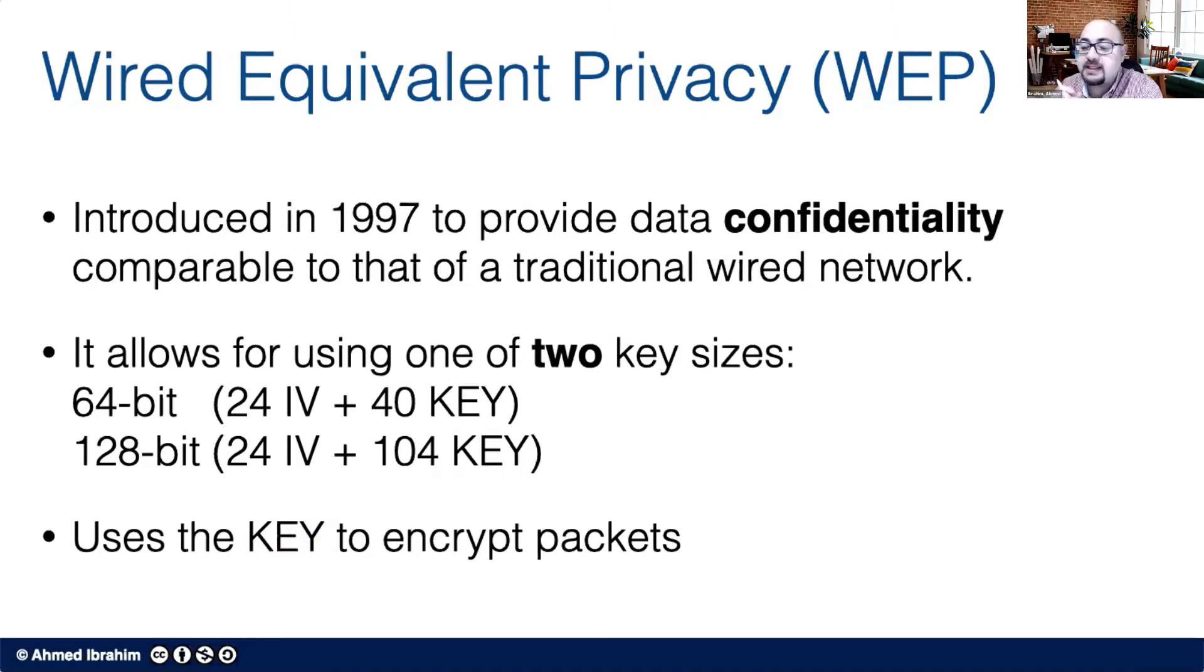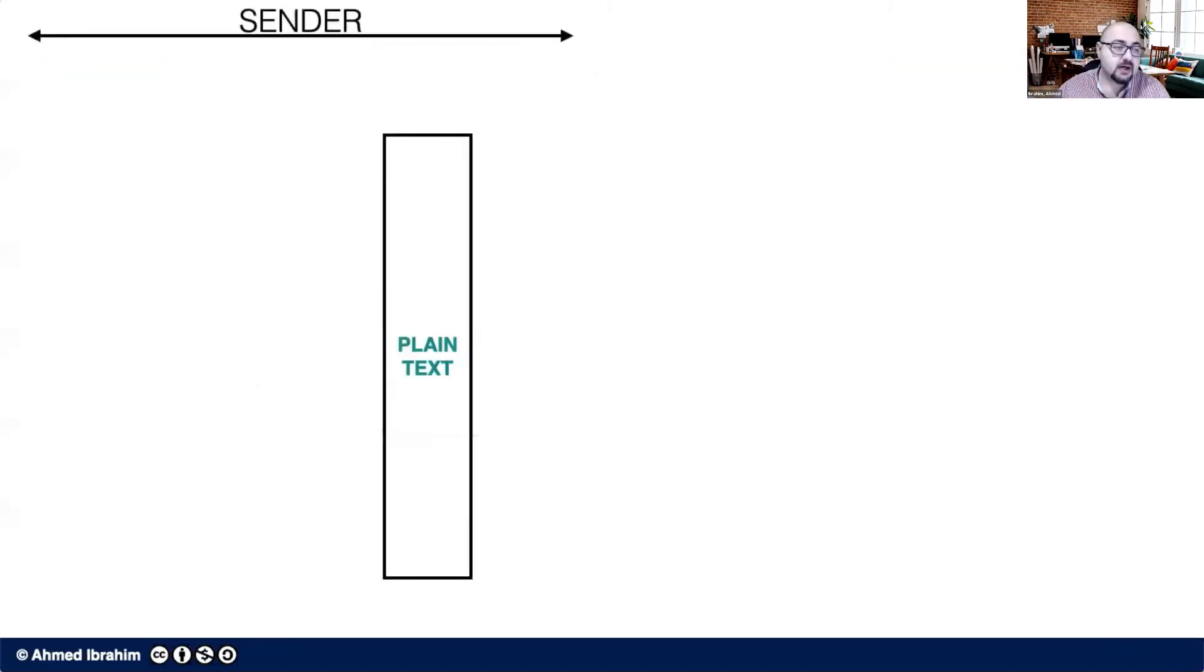In WPA2, you will see that it's something different. The key is used to negotiate a new key that is random that gets to encrypt the packets. So let's get started and take a look at how things happen.